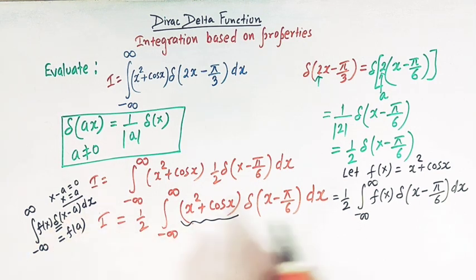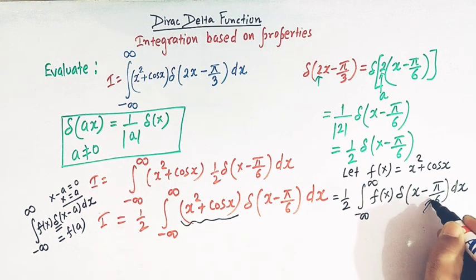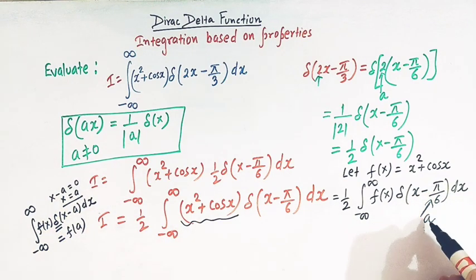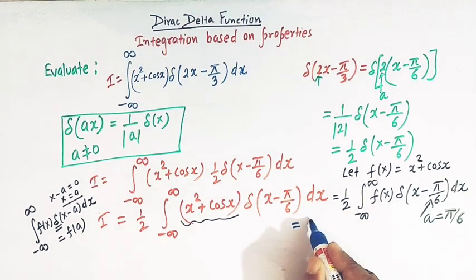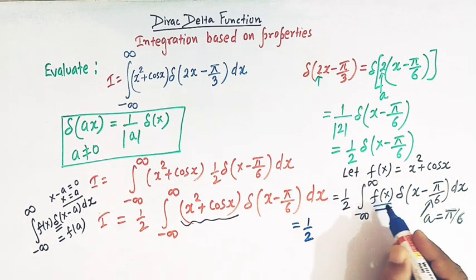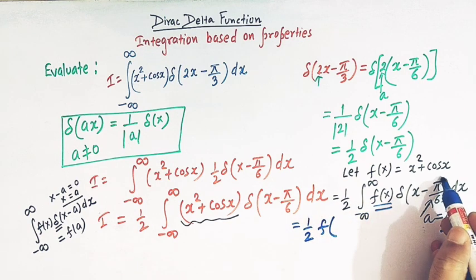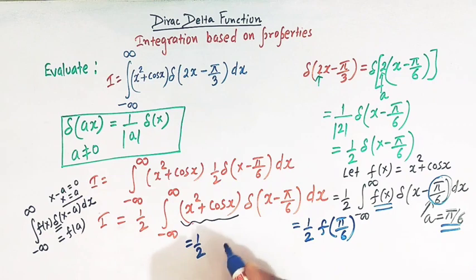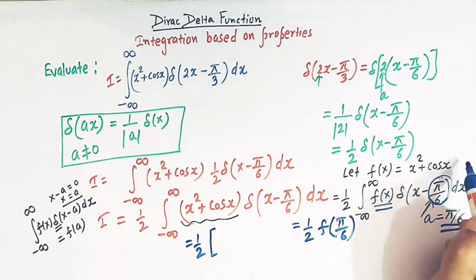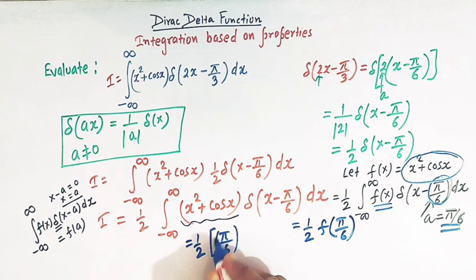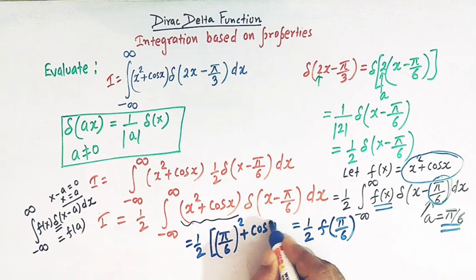Comparing our integral with the sifting property definition, we identify a equals pi by 6. The delta function acts on f(x) at the point x equals pi by 6. So the value of the integral is one-half times f(pi by 6). Substituting into f(x) = x squared plus cos x, we get one-half times (pi by 6) squared plus cos(pi by 6).